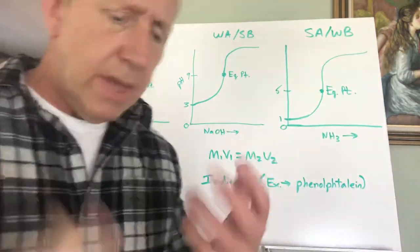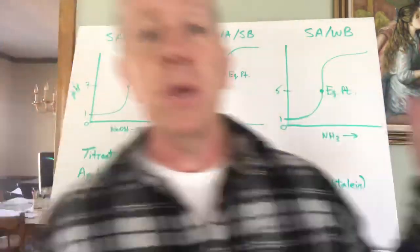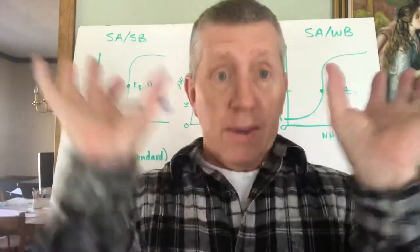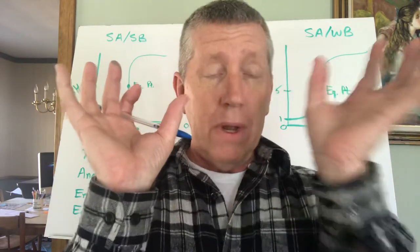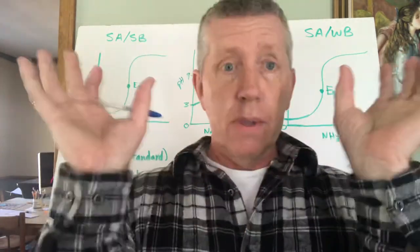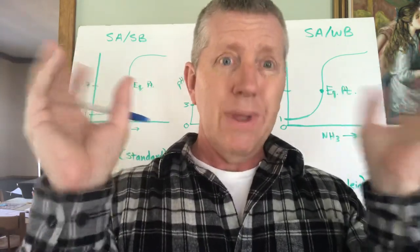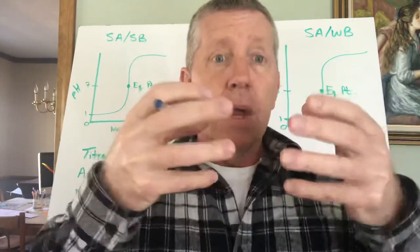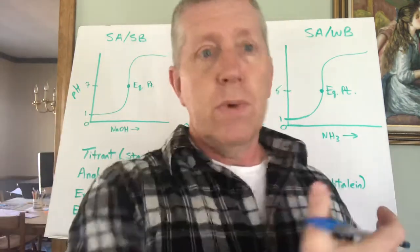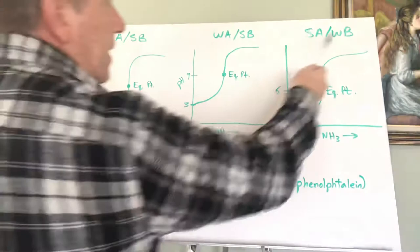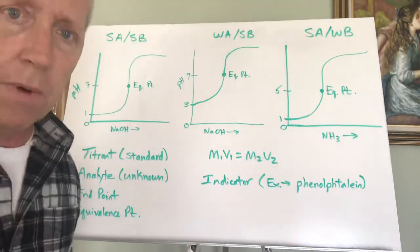Even though you have equal volumes of base and acid, the strong acid is dissociated 100%, giving a large amount of H⁺ ions, while ammonia — being weak — doesn't contribute as many OH⁻ ions. The H⁺ ions dominate the OH⁻ ions. Equal volumes does not mean equal amounts of available H⁺ and OH⁻. So with strong acid dominating a weak base, the equivalence point is below 7 — around pH 5.